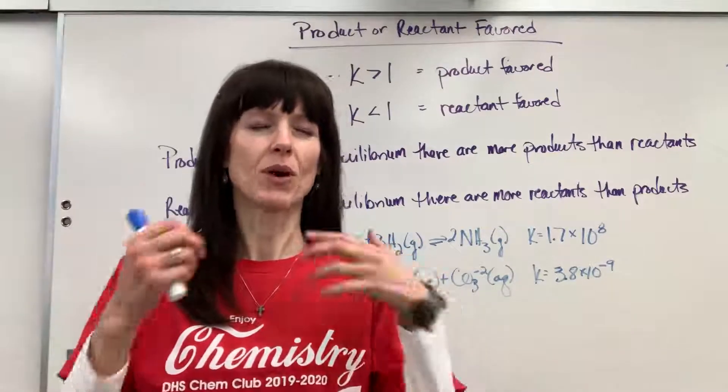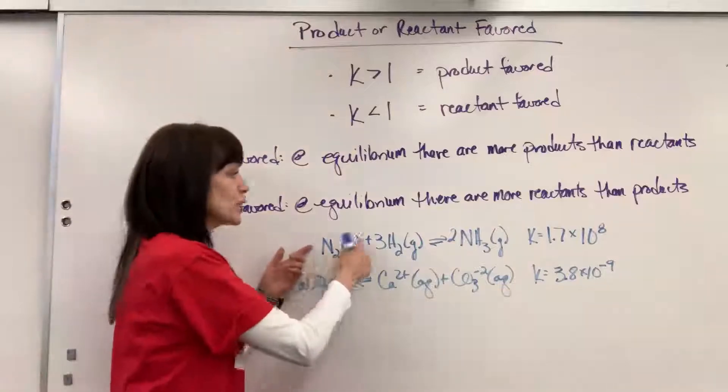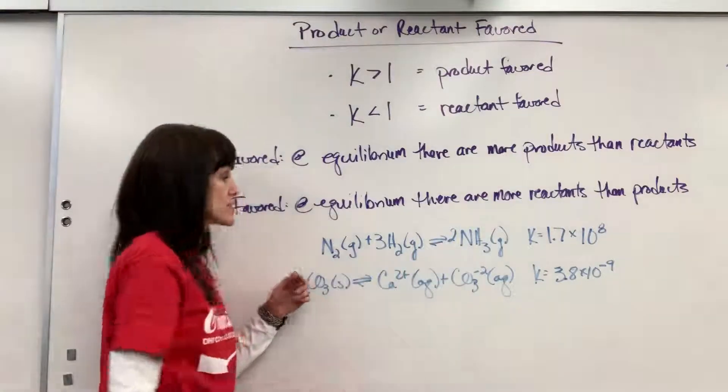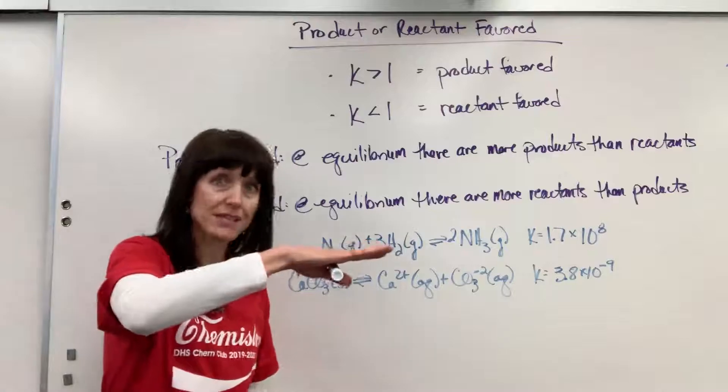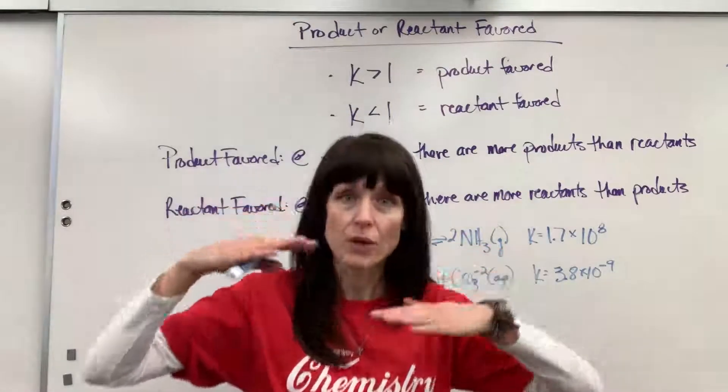When this reaches equilibrium, go back in your memory. What's equilibrium? It's the equal rate forward and reverse. When reactants change to products, that certain rate equals the rate at which products go back to reactants. When those rates,